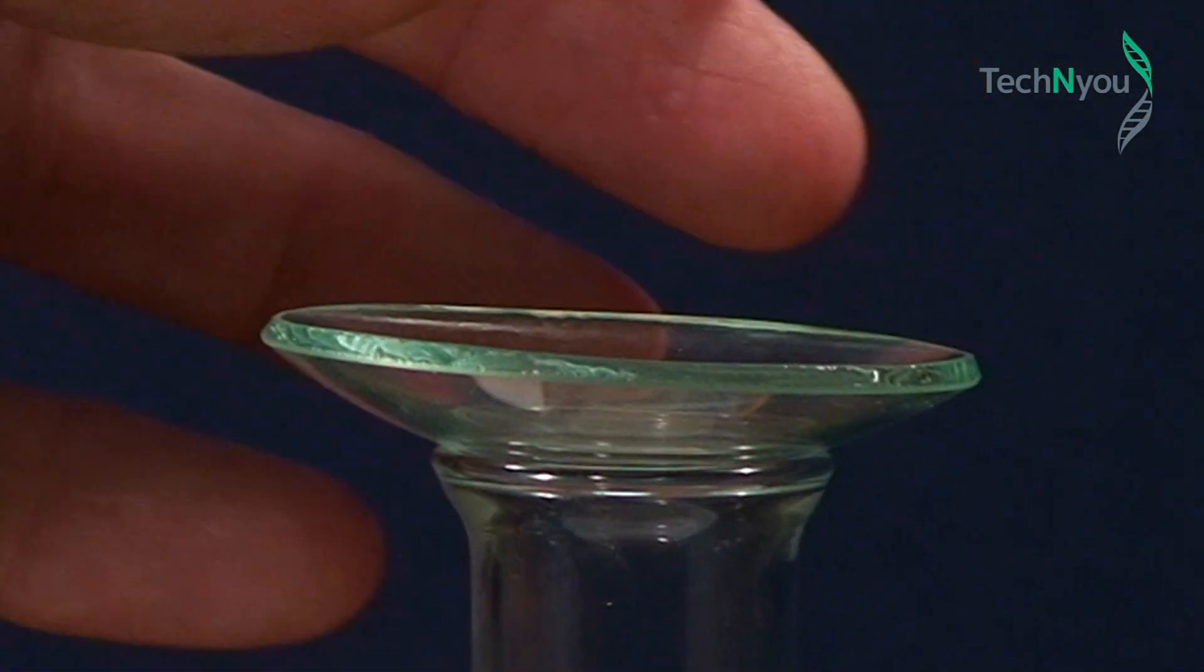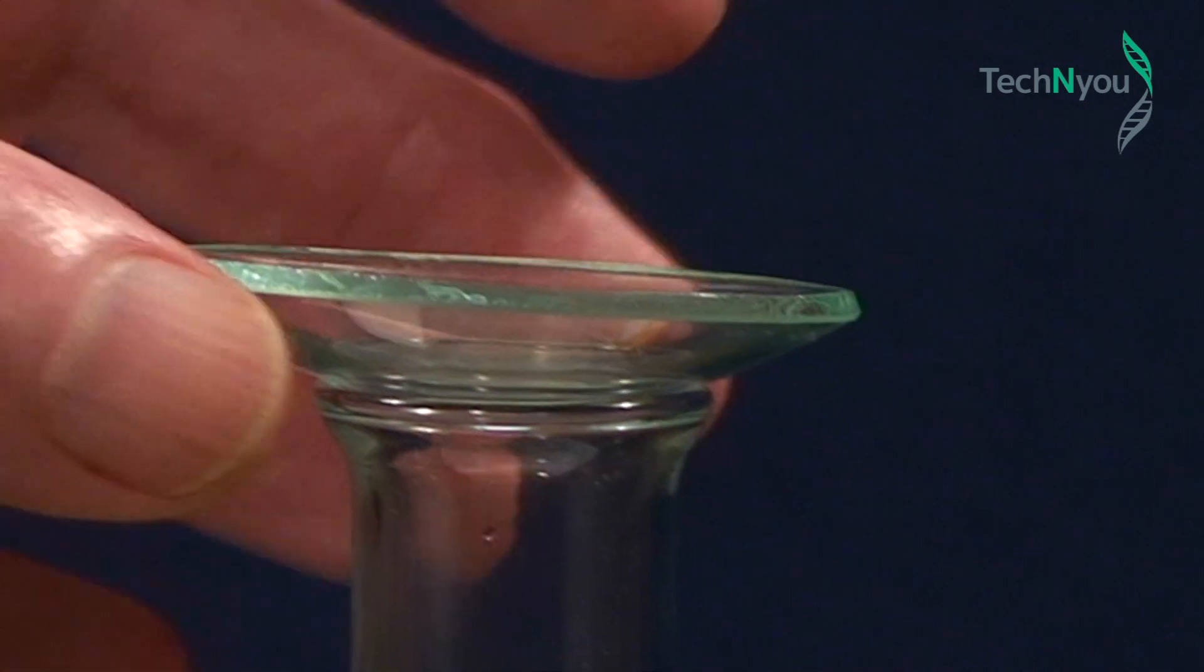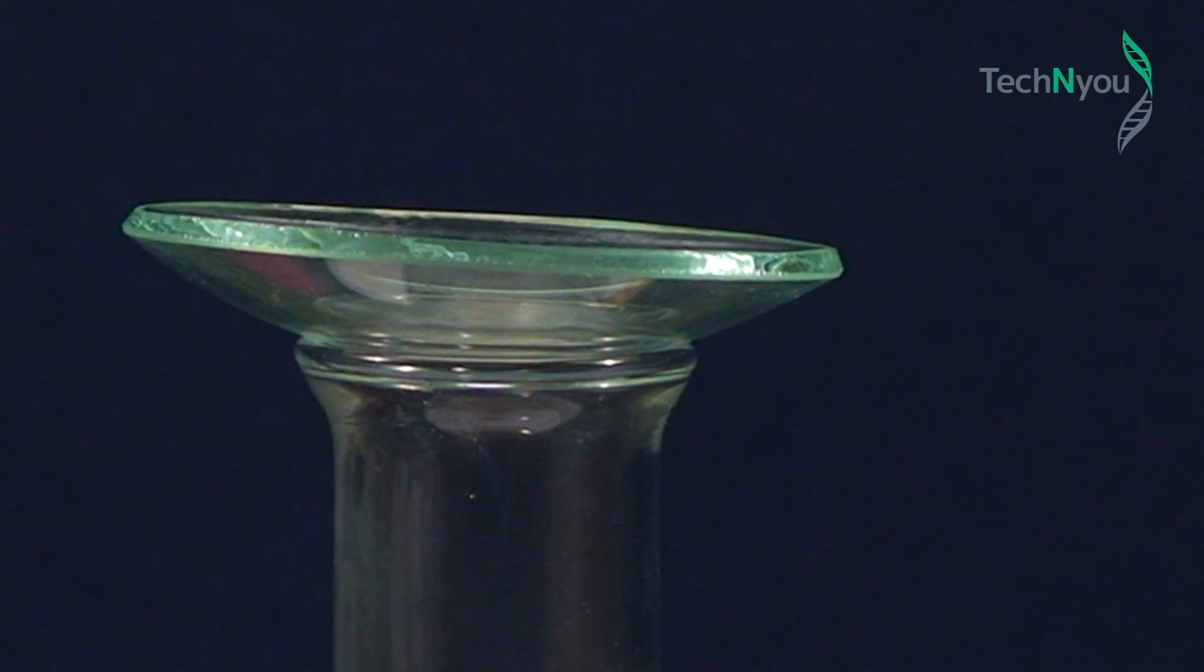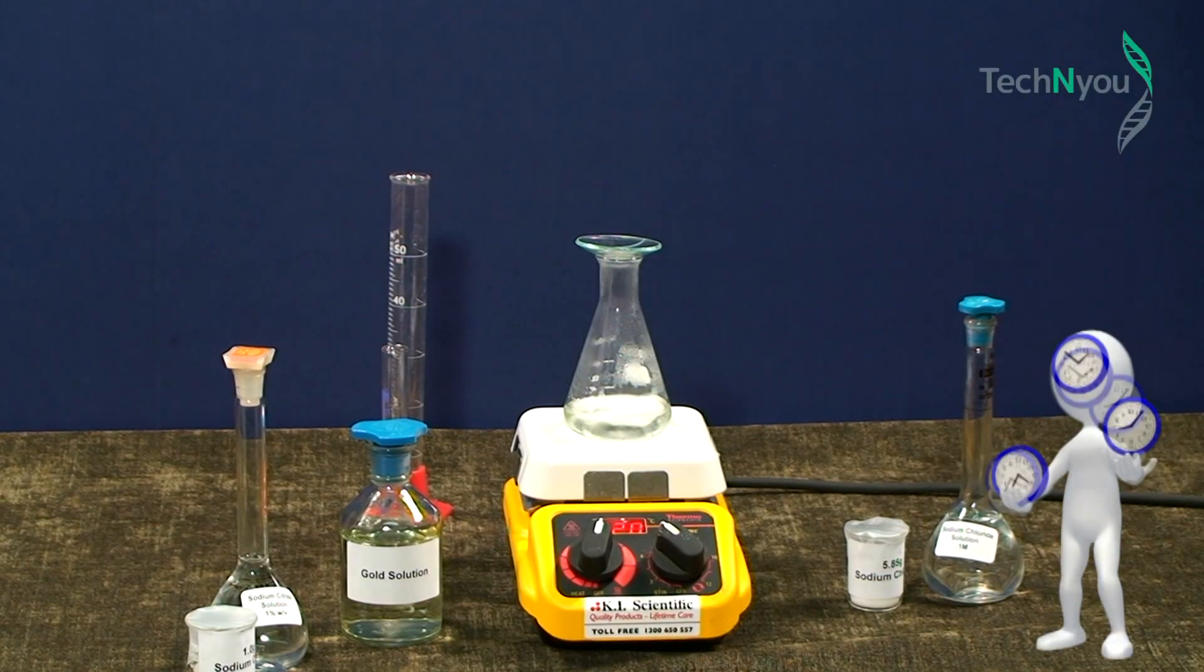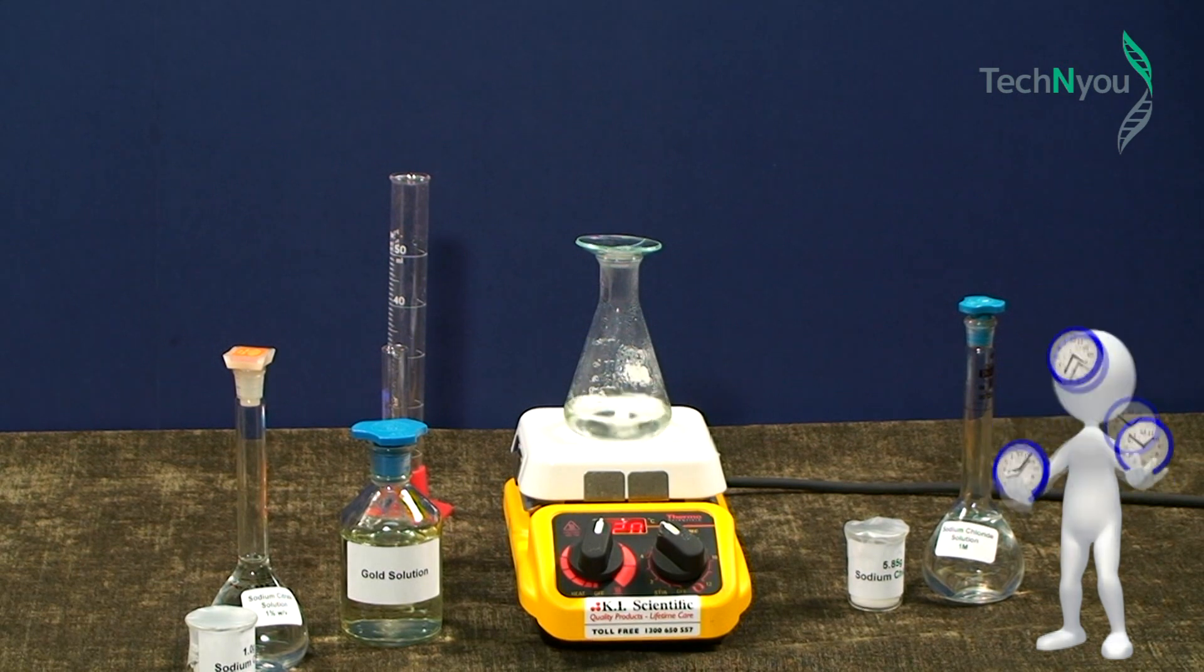Please note the watch glass on top of the conical flask. It's there to prevent the solution evaporating as it heats. Once it boils, we'll remove the watch glass and add the citrate solution. OK, it's boiling.